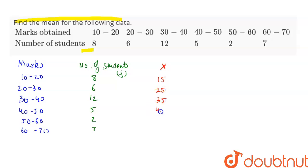Now we will be finding column XF. So column XF will be 15 into 8, that is 120. Then we have 25 into 6, that is 150.